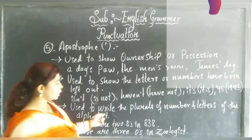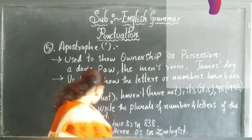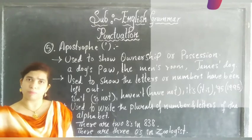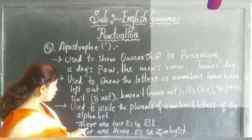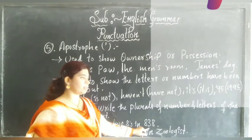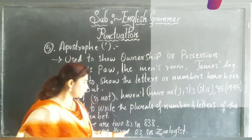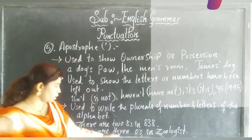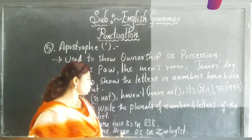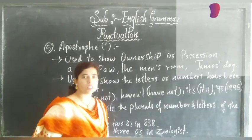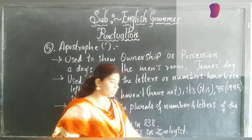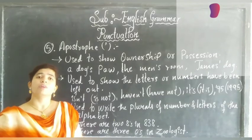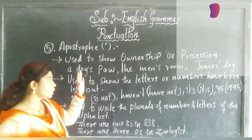Apostrophe is also used to write the plurals of numbers and letters of the alphabet. For example, 'There are two 8's in 838.' When showing plurals of numbers, we use apostrophe. 'There are three O's in zoologist' — one, two, three. This is how we use apostrophe in grammar.